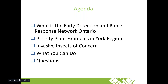Today we're going to talk about some of the ways you can get involved to stop the spread of invasive species in your communities here in Ontario. I'll talk about the citizen science program I run through the Invasive Species Center, discuss some priority plant examples in York Region, as well as two insects of concern. Then we'll discuss actions you can take to help reduce the spread, including how and why to report in your communities, and we'll have time for questions at the end.